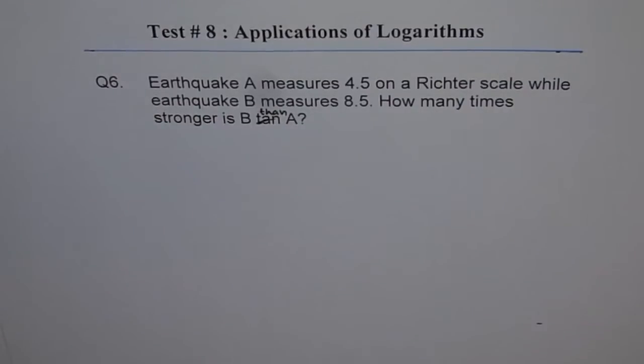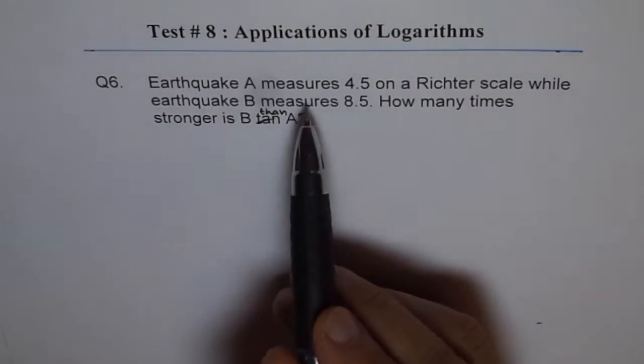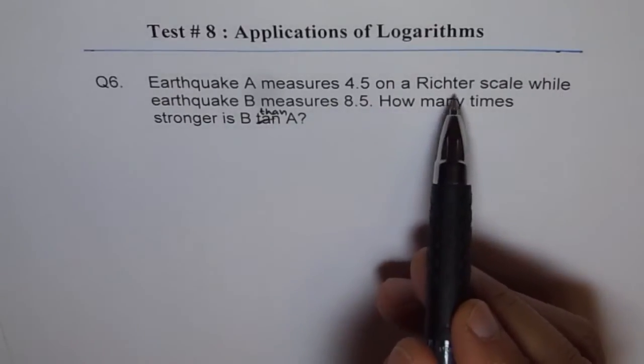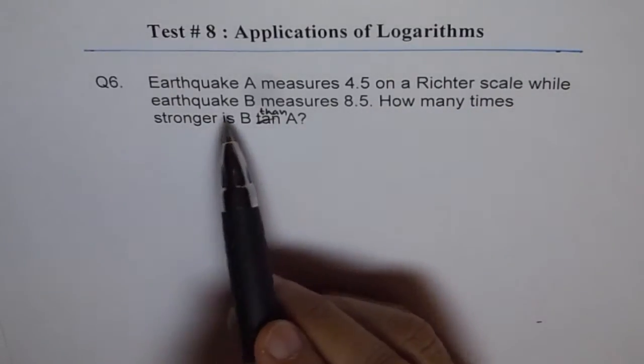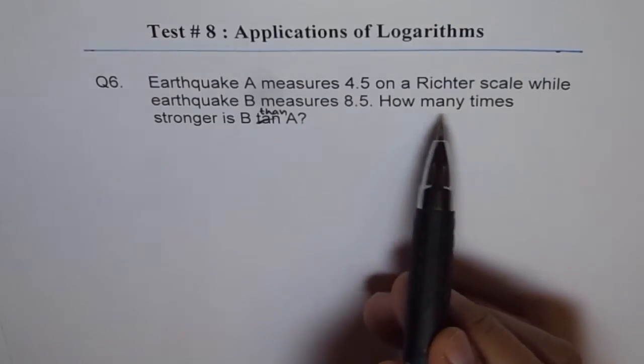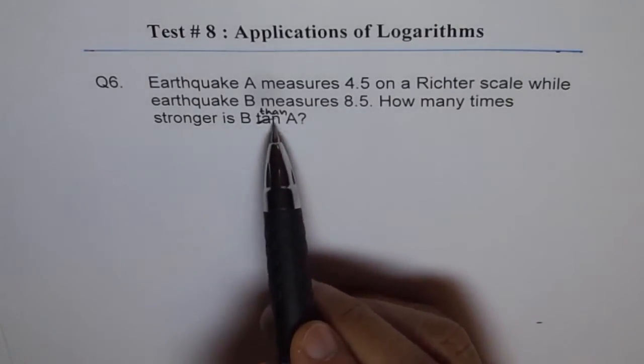Question 6. Earthquake A measures 4.5 on Richter scale, while earthquake B measures 8.5. How many times stronger is B than A?